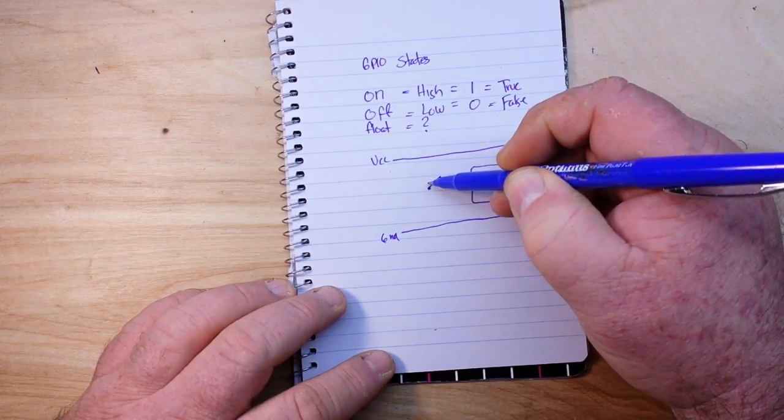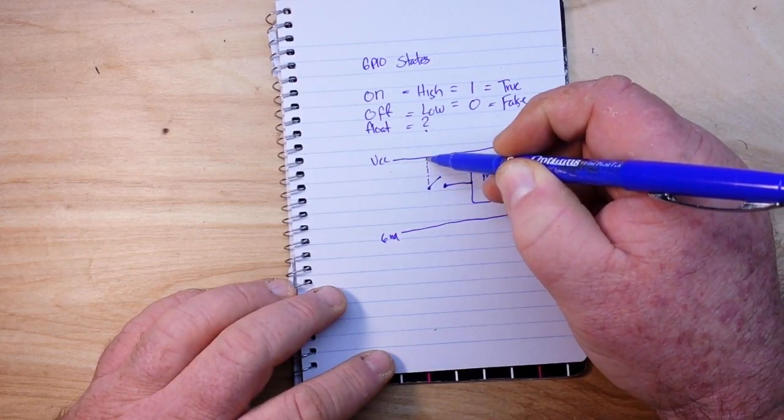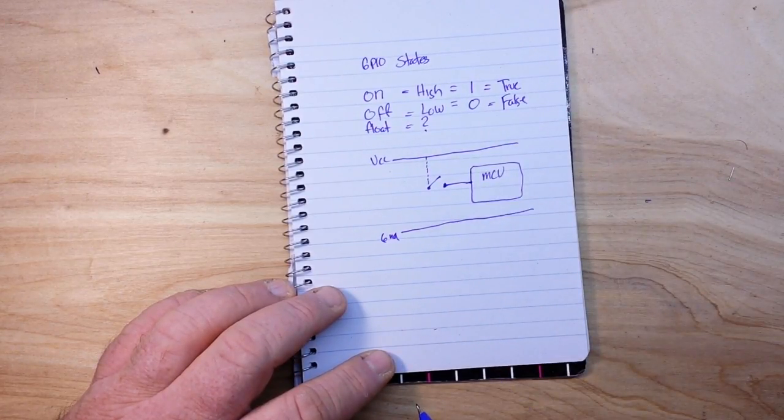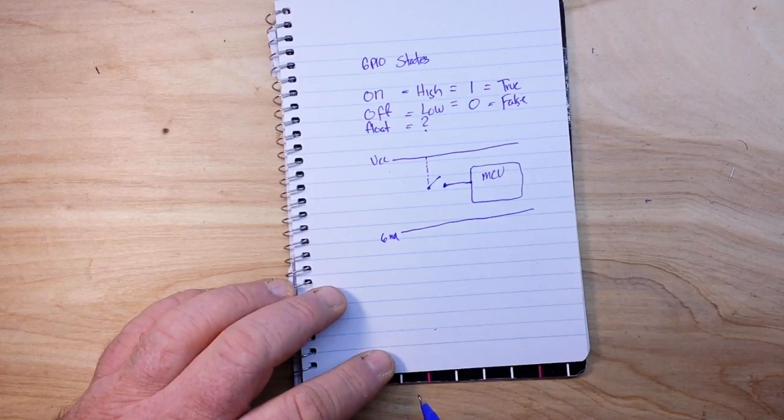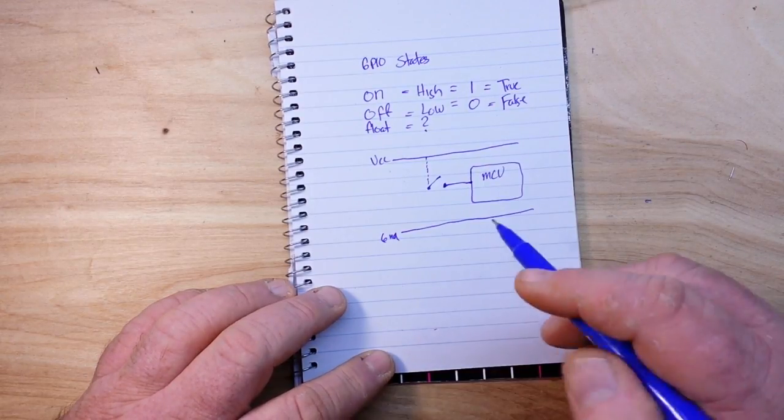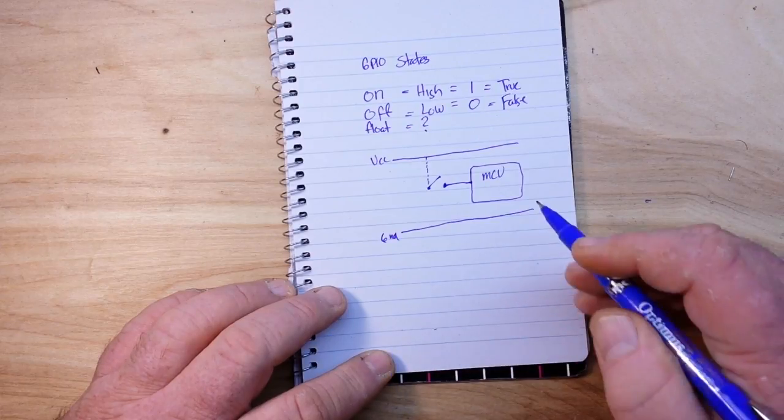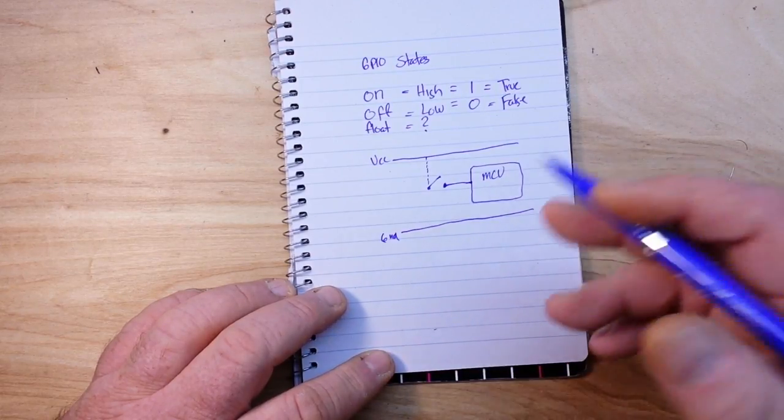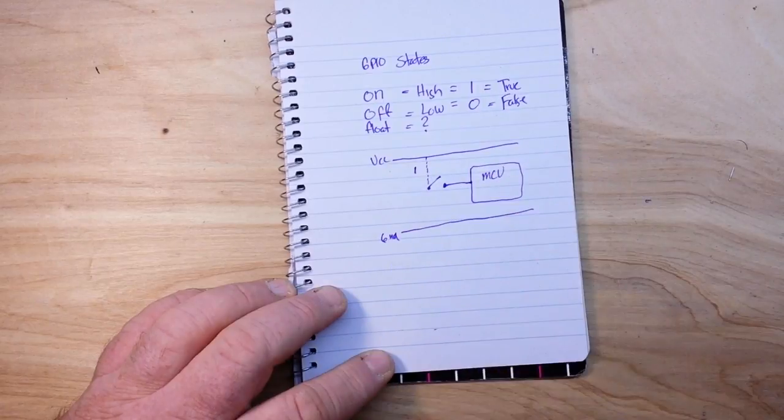So if we run one side of the switch to VCC, then when the switch is pressed we turn the pin on or we get a logical high or one. We'll just mark this up here as a one.